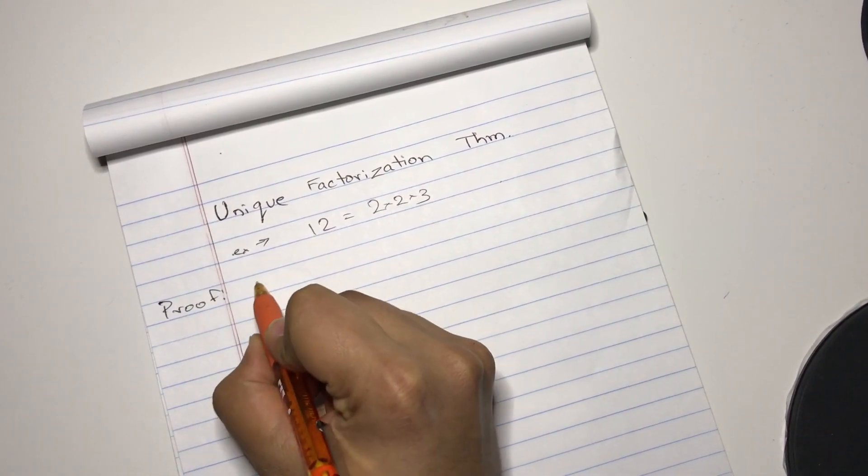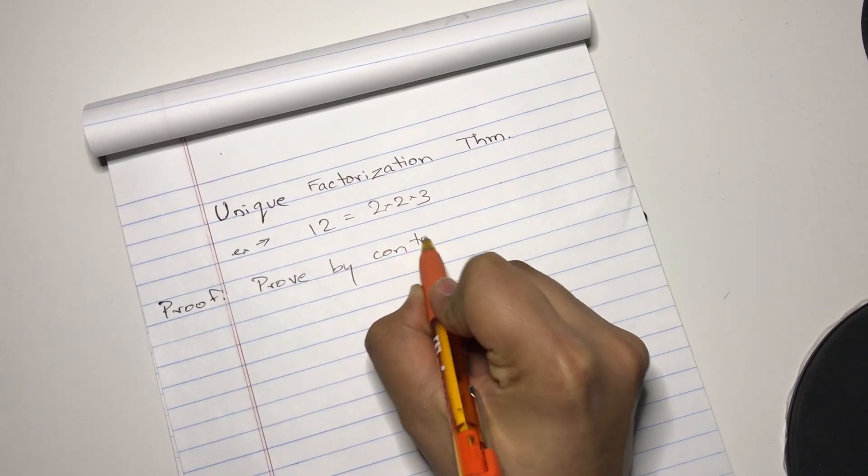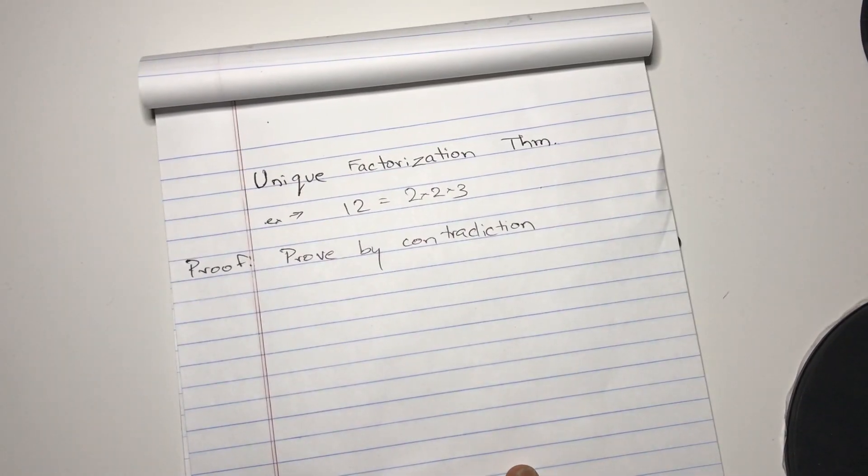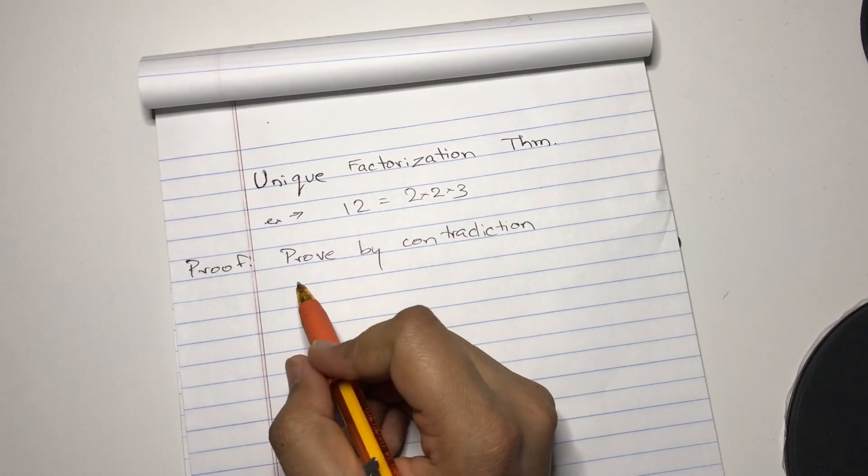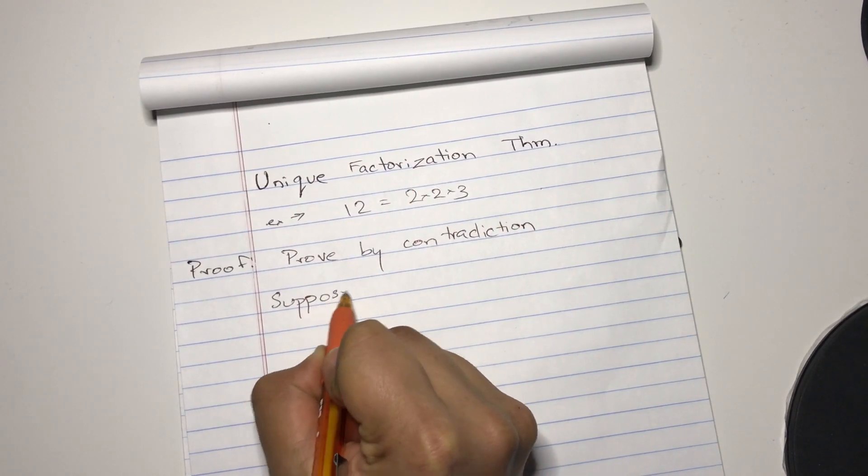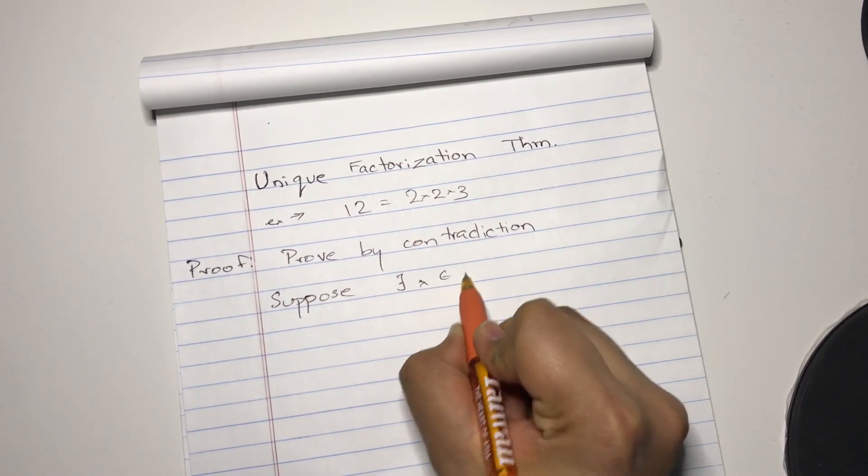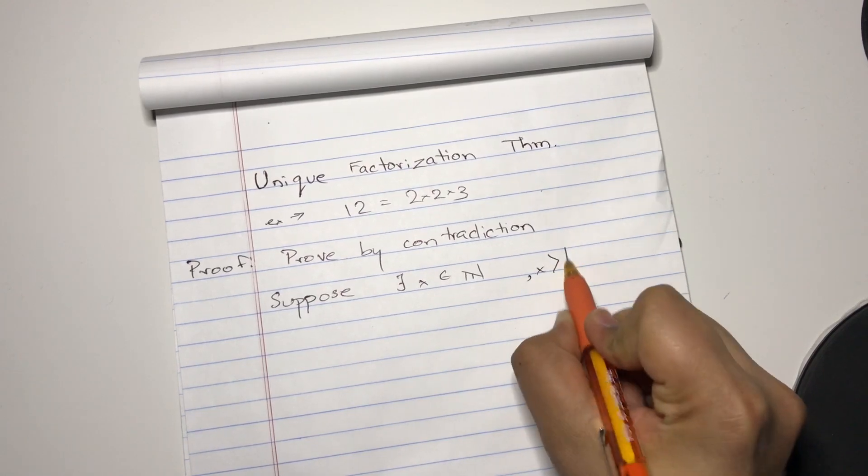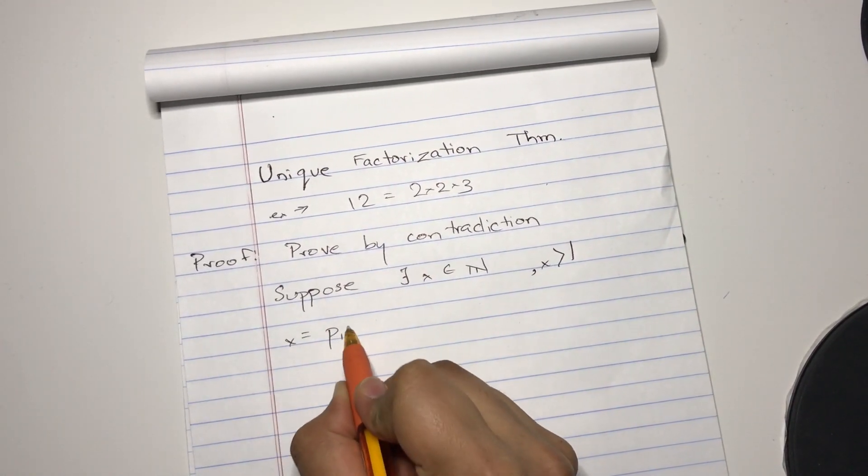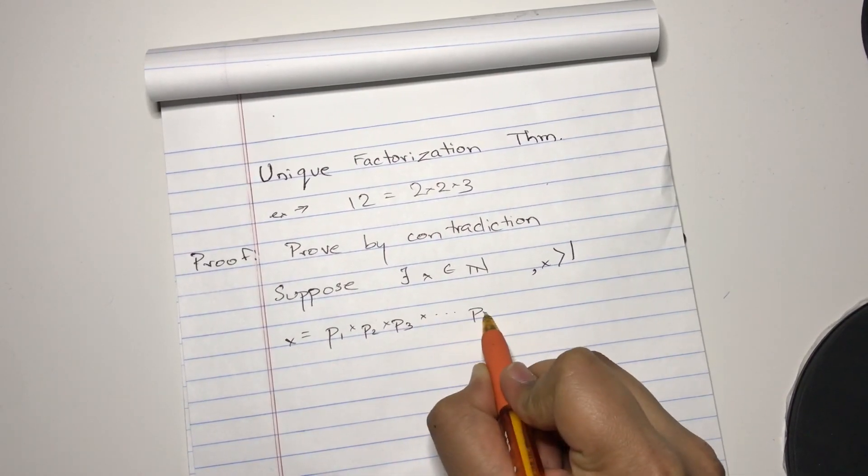Like last time, it's going to be a proof by contradiction. Okay? So therefore, I'm going to suppose there is a number x belonging to a set of natural numbers, x is greater than 1, and x can actually be expressed by p1 times p2 times p3 all the way to pn.